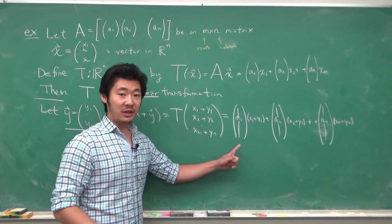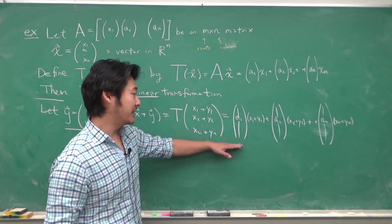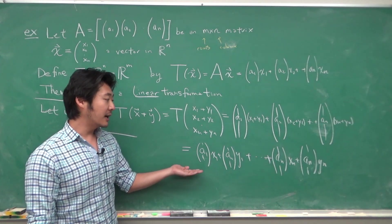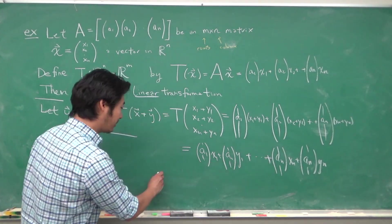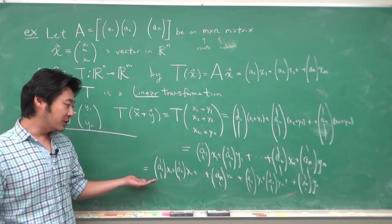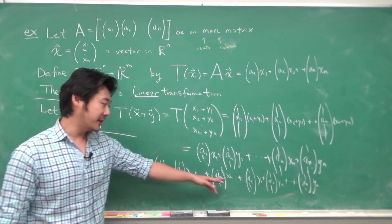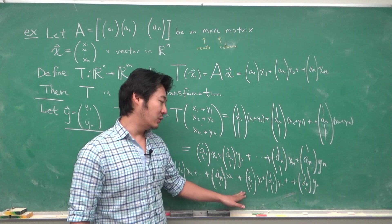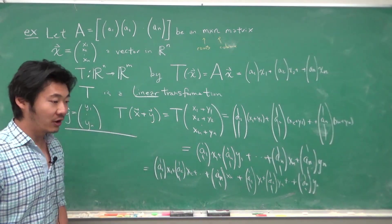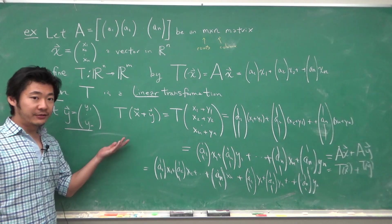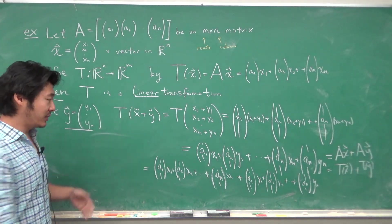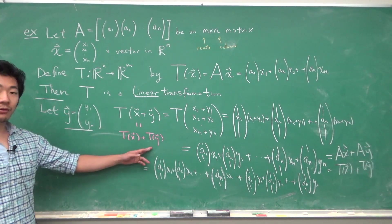So using that property, we can further write this out. So we split each sum. But now we can collect all the weights with x₁ and all the weights of y₁ separately, so that we have the linear combination with weights x₁ to xₙ and the linear combination with weights y₁ to yₙ. But that is nothing more than just Ax plus Ay, which is just T(x) plus T(y). So we have shown that T(x+y) splits as T(x) plus T(y).